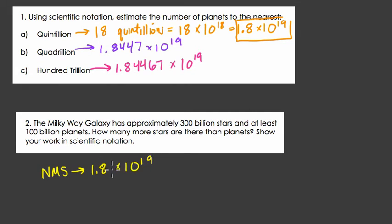Now if we look at the Milky Way, there are 300 billion stars and at least 100 billion planets. Let's write those two numbers in scientific notation, and then we can answer this question because they want us to work in scientific notation.